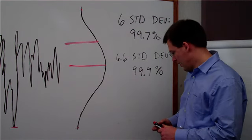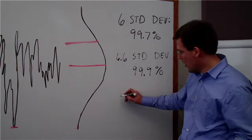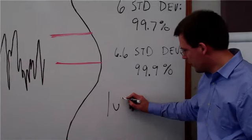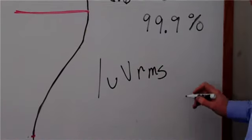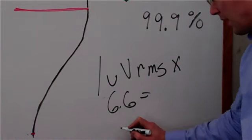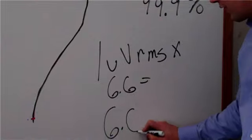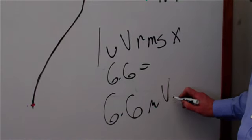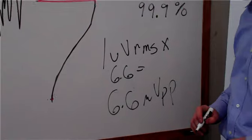And it's very easy, you just multiply. So if I had a 1 microvolt RMS signal, I just multiply by 6.6 and I get my approximation of 6.6 microvolts peak-to-peak. And that's all how you do it.